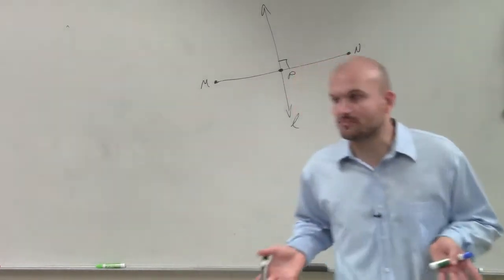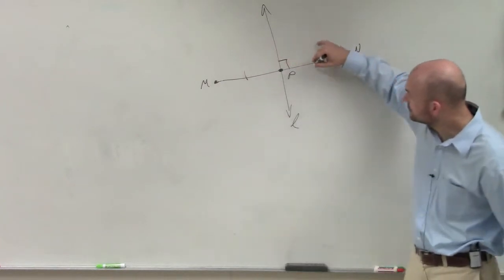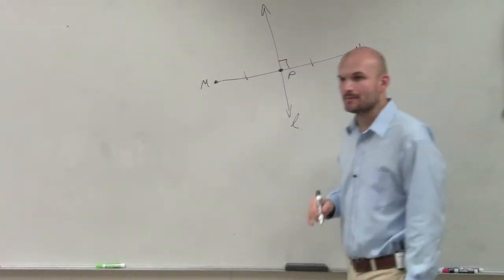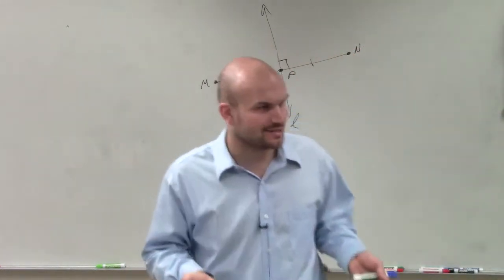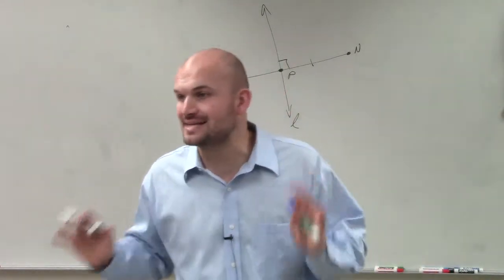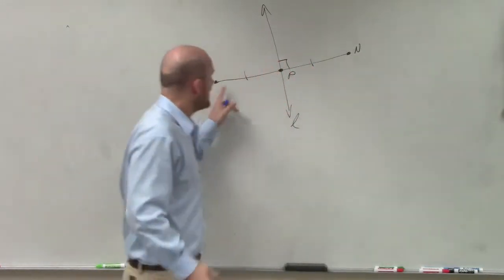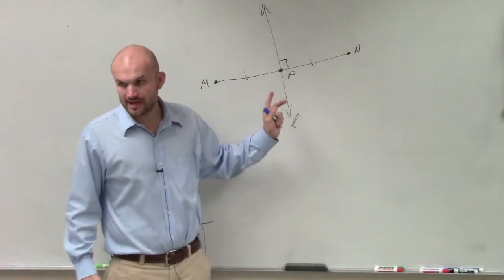Now remember, when we're talking about perpendicular bisectors, what that tells us is that it cuts my line segment in half because it bisects it, right? Cuts in half. Therefore, if we know we have a bisector, or if a line bisects another, we know that it now cuts it in half, where now MP is congruent to NP.